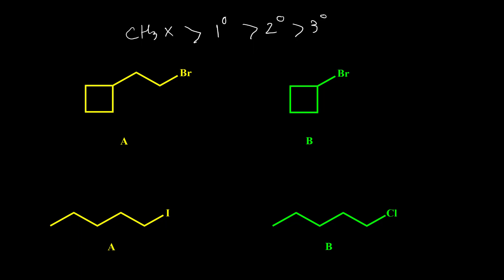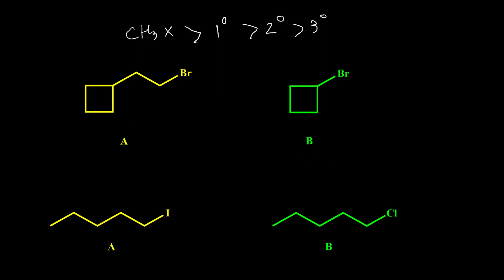Here is the first example. We would like to know which of compounds A and B is better for SN2 reaction. We look at the carbon directly attached to the halogen or leaving group. This carbon is primary, and this carbon is attached to two carbons, so it is secondary. Based on this trend, primary is better than secondary, so this compound has the faster rate in SN2 reaction.